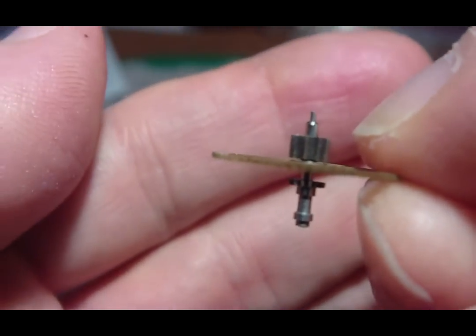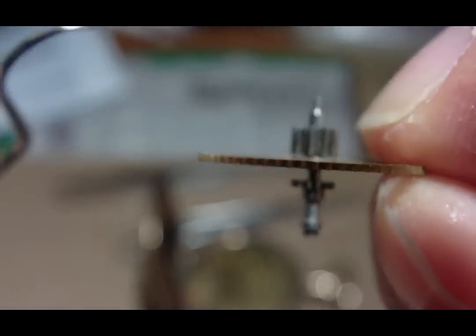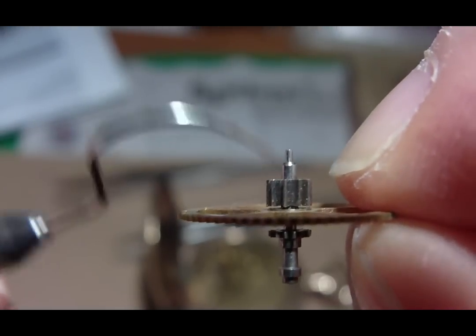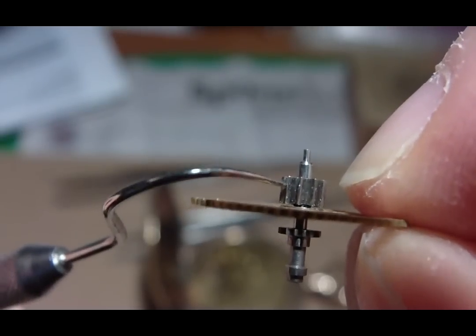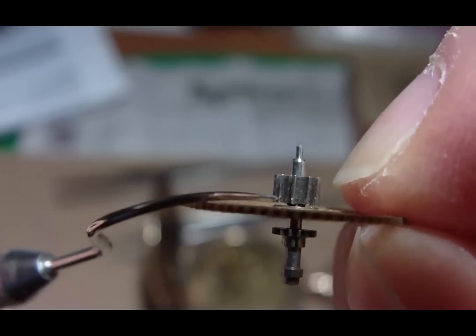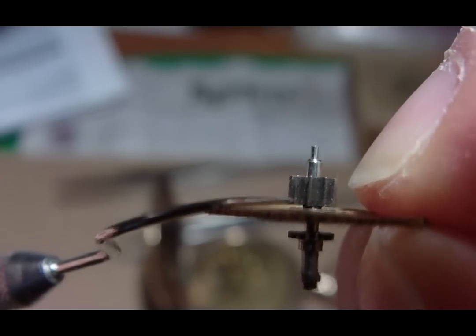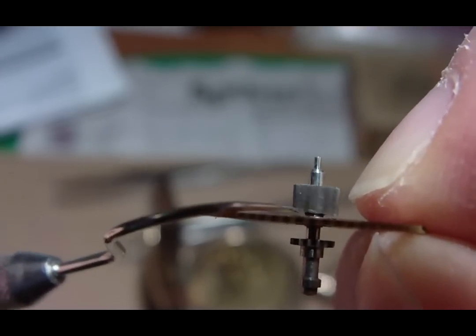If I poke it this way, I'm pushing on it to the right and it doesn't want to move because that's the mainspring. But when I push on it to the left, you can see it unscrews.